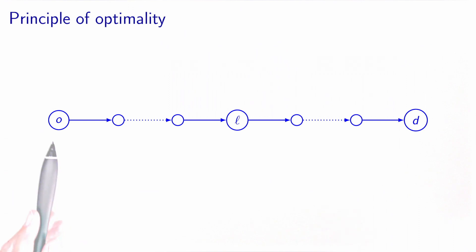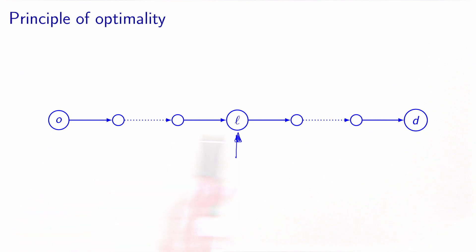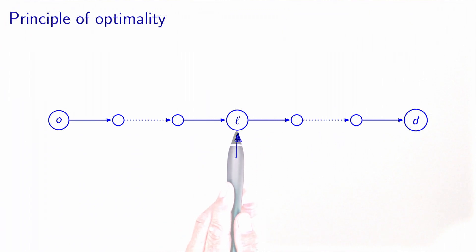Another nice property of shortest path problems is called the principle of optimality. Consider a path starting from the origin to the destination along various nodes. If you take any intermediate node L, and the path P is a shortest path between O and D, then the sub-path from O to L is a shortest path between O and L. Similarly, the sub-path from L to D is a shortest path from L to D. This is the principle of optimality. In this video, we have reviewed properties of shortest path problems: the optimality conditions based on labels, the fact that a negative cost cycle means no shortest path exists, a lower bound on the shortest path length, and the principle of optimality stating that sub-paths of a shortest path are also optimal.